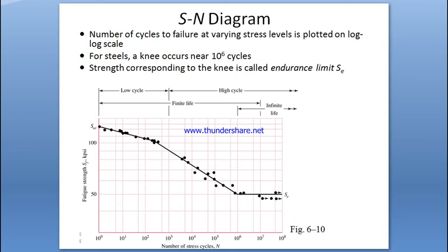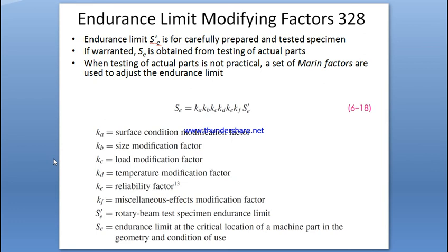Additional factors include abrupt changes in diameters. We will consider these one at a time: surface condition, size, load factor, temperature, reliability factor, and miscellaneous factors. The rotary specimen endurance limit (SE) is the theoretical value, while the practical endurance limit is the one that gets modified by these factors.